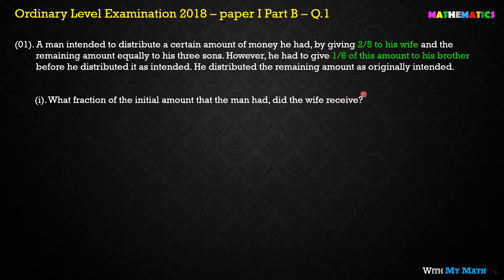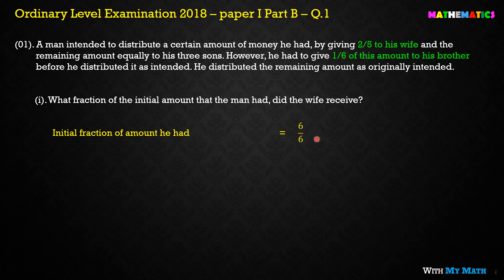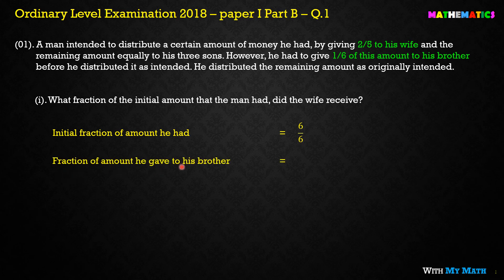What is the total amount? The total amount is 1 — as a fraction, the sum equals 1. So we take the total as 1. Initially he gave 1/6 portion to his brother. Therefore the fraction of the initial amount he had is 6/6, which means 1. The fraction he gave to his brother is 1/6.